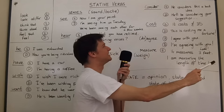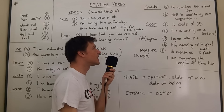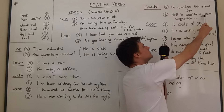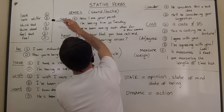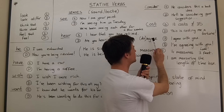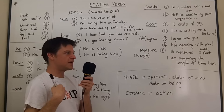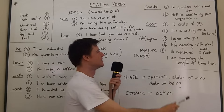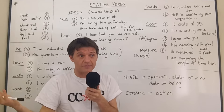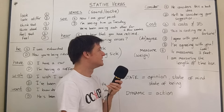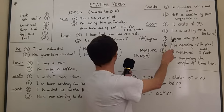'He considers this a bad idea' is just like 'he thinks it's a bad idea' — stative. But 'he'll be considering your suggestion' is like 'he'll be thinking about your suggestion' — dynamic. With 'agree': 'I agree with you' means my state of being is in agreement with you. But 'I am agreeing with you' means I'm nodding my head, actively saying yes — both forms are possible, but the meaning differs.